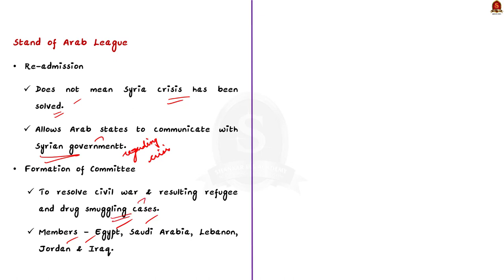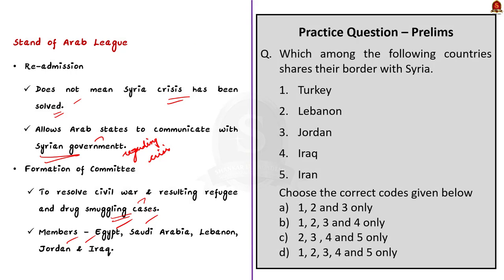In this discussion, we saw about the Arab League, its objective, its membership, and the relations between Syria and the Arab League. This topic is very important for your prelims exam, so make note of each and every point discussed. Now let's move on to the next news article discussion.